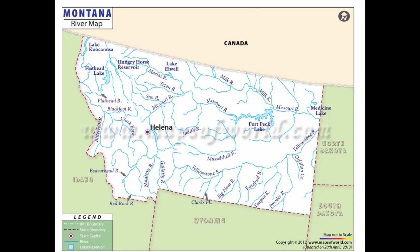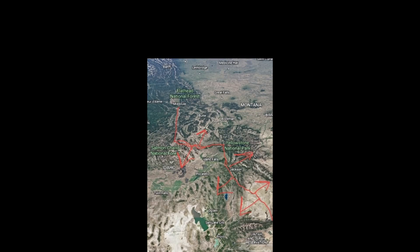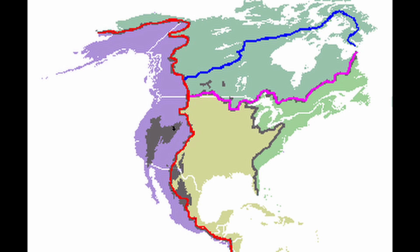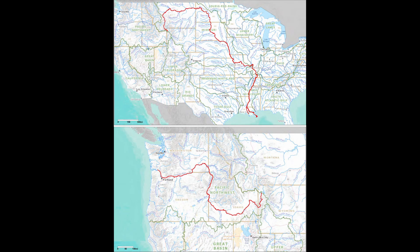Extending north and south through Montana's western terrain is the continental divide of the Rocky Mountains, separating Montana into two drainages — one west sloping and the other east sloping — enabling gravity to send the state's water to either the Mississippi or the Columbia.